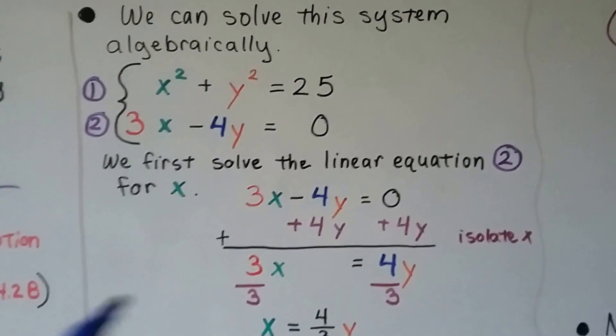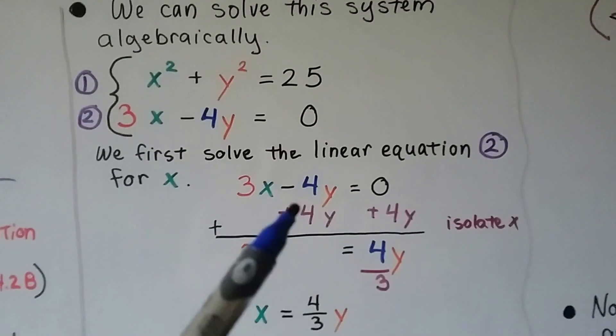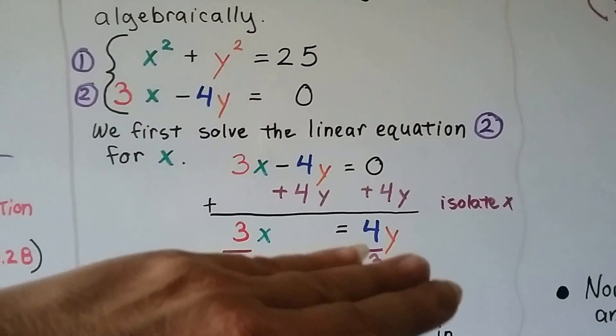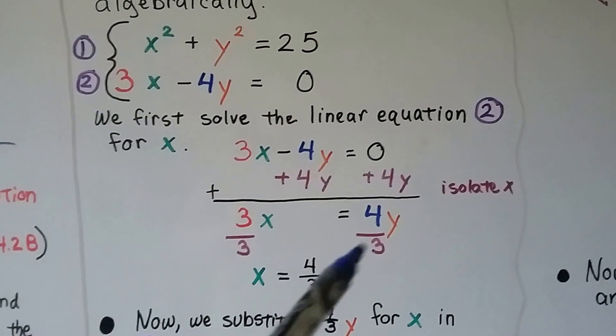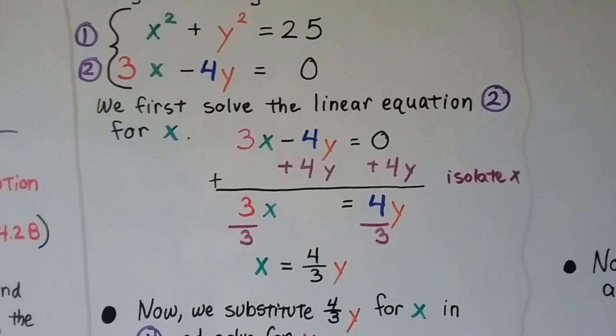We solve it for x. We can isolate x by adding 4y to each side of the equation. That's going to give us 3x = 4y. To isolate x, we divide both sides by this coefficient 3 and we get x = 4/3 y.